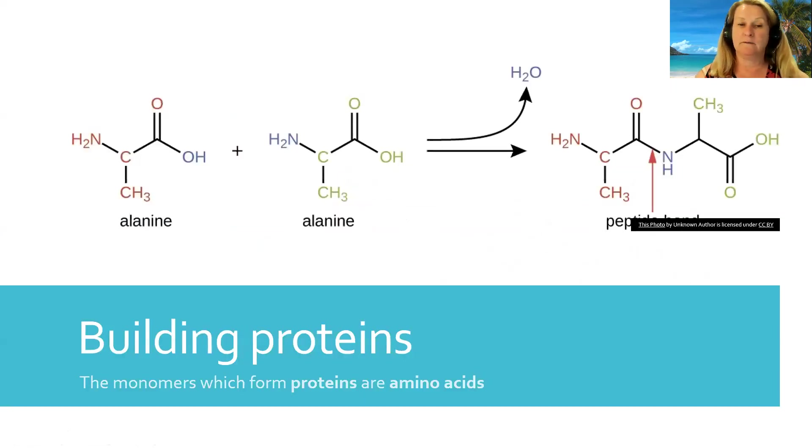Now proteins are formed from monomers of amino acids. So here you have an example of two different amino acids, alanine, and actually two of the same amino acids, two alanines. And you don't need to know the structure of individual amino acids.